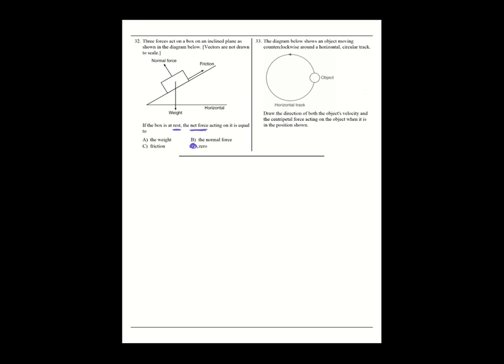Number thirty-three: draw the direction of both the object's velocity and centripetal force when it's in the position shown, moving counterclockwise. Centripetal force means toward the center, so it points inward. Velocity is tangent to the circle, meaning it goes up in a straight line. Those are your two vectors for this question.